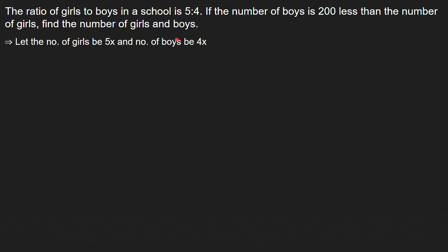Let the number of girls be 5x and the number of boys be 4x. Since we do not know how many groups there are, we take that number of groups as x — the number of girls as 5x since there are 5 girls in each group, and the number of boys as 4x since there are 4 boys in each group. We are given that 5x minus 4x is equal to 200, as the number of girls is 200 greater than the number of boys.